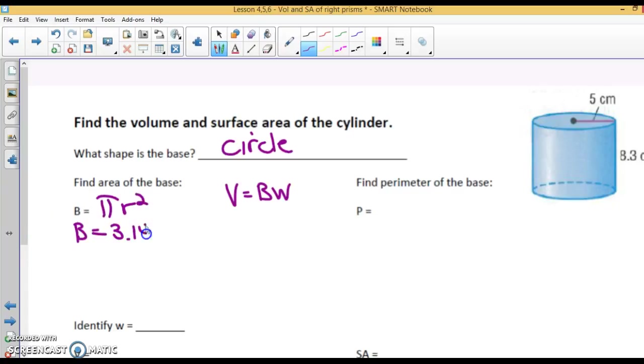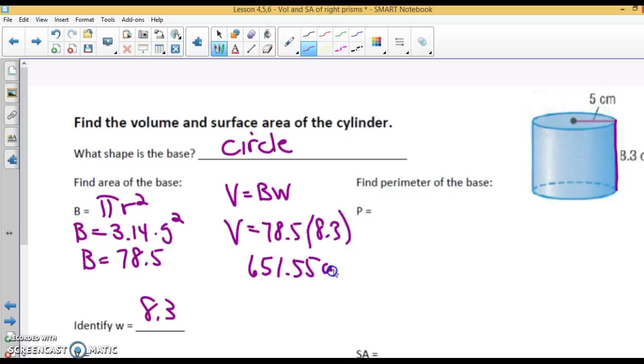3.14 times the radius of that circle is 5. My area of the base is 78.5. What's my width? The width is the distance between the two bases, 8.3. So my volume is going to be capital B, which I found to be 78.5, times the width 8.3. And you end up with 651.55 cubic centimeters.